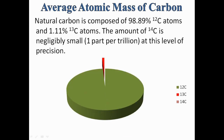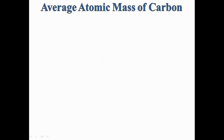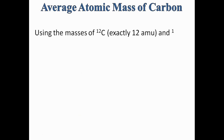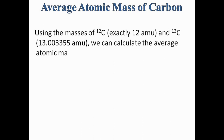We can see this in the form of a pie chart. The green area shows the abundance of carbon-12 and the red area shows the abundance of carbon-13. C14 is present in a very negligible amount and is not represented here. Using the masses of C12 (12 AMU) and C13 (13.003355 AMU), we can calculate the average atomic mass of natural carbon.